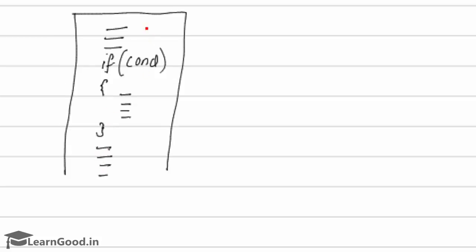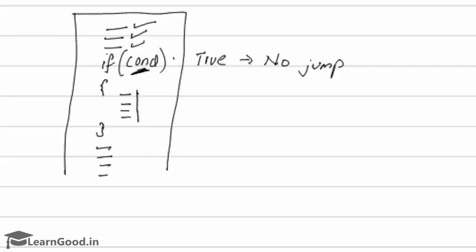The program execution starts from the first line, then the second line, then the third line. When it reaches the if statement, it checks the condition. If the condition is true, there is no jump — it will execute the set of statements enclosed within the open and closed braces, and then proceed as usual.